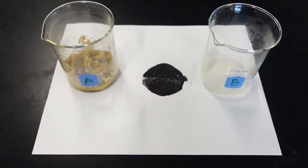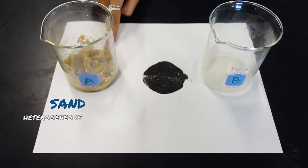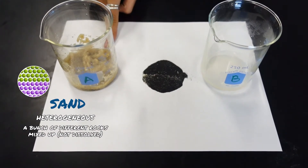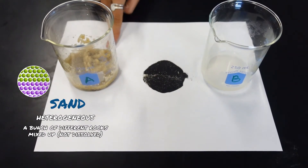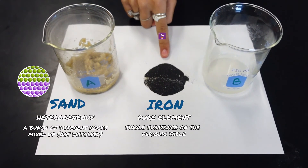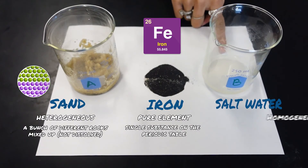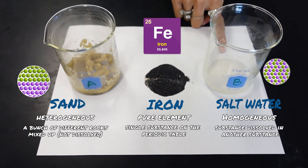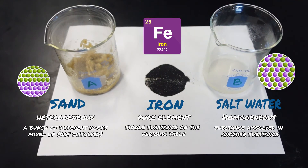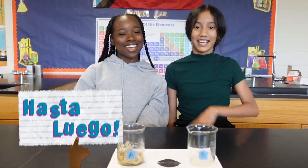At the end of our lab we are left with three separated substances: sand, a heterogeneous mixture; iron, a pure element; and salt water, a homogeneous mixture. Thanks for watching.